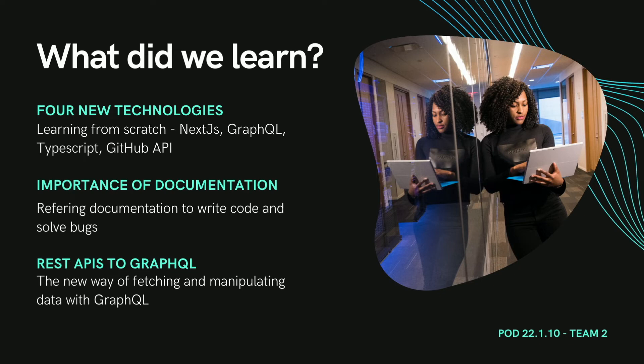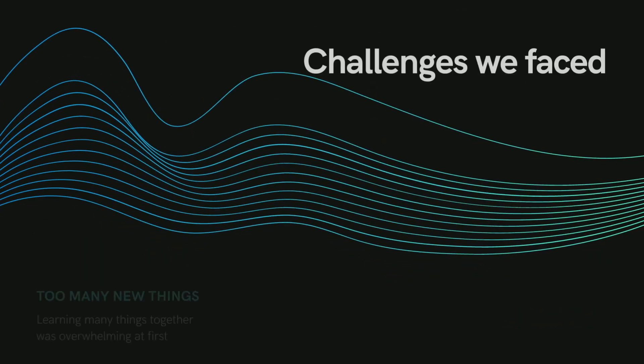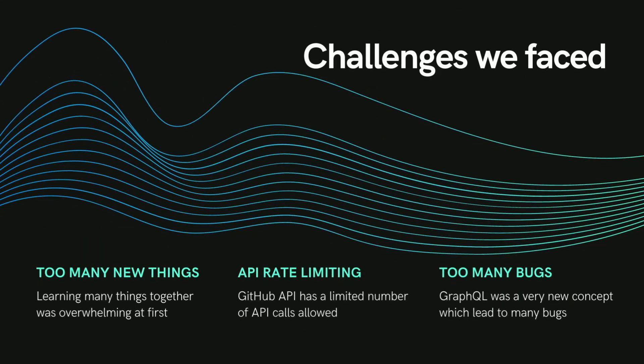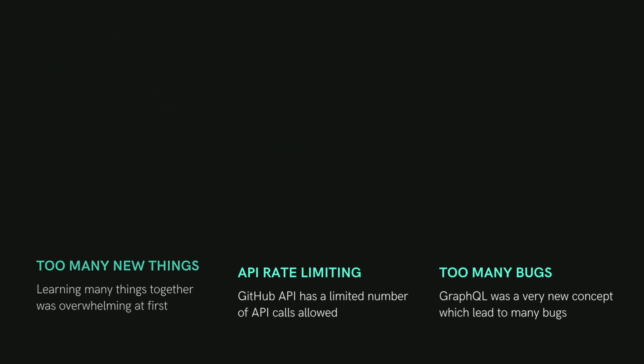Moreover, we have always used REST APIs to make API calls, so trying out GraphQL was very fascinating. Some of the challenges we had working together was the fact that GraphQL was something we had to learn and implement in our build. During the design of our application, our GitHub access token was revoked, which made us a little bit nervous. But luckily for us, the ban has been lifted. So we had to learn lots of new technologies like TypeScript, GraphQL, and Next.js.